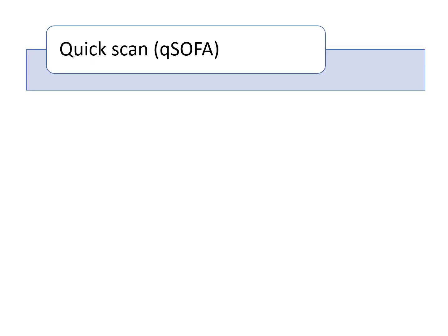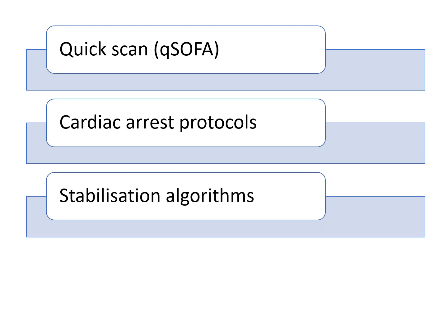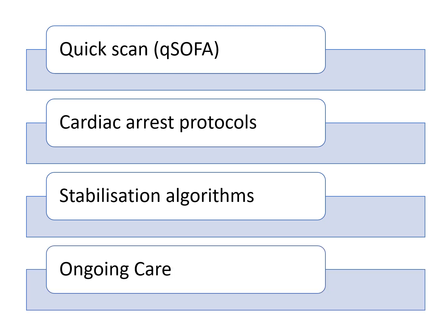When you come to a critically ill patient, there are a number of phases in the management of these patients. Often when we get there, we do something called a qSOFA or a quick scan, where we're really just looking at altered mental status, respiratory rate, and hemodynamics. There are cardiac arrest protocols, stabilization algorithms that refer to the first hour up to maybe six hours. I'm not going to deal with any of these. I'm going to give you a system for looking at ongoing care of the critically ill patient — the patient that you have now stabilized and need to reassess maybe a few times a day and on a daily basis.